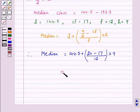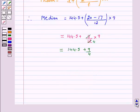Median is equal to 144.5 plus 3 upon 12 into 9, which is equal to 144.5 plus 9 upon 4, which is equal to 144.5 plus 2.25. Therefore, median is equal to 146.75.